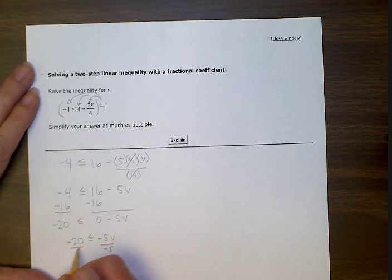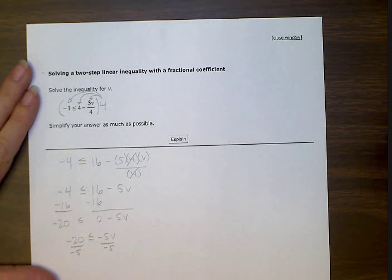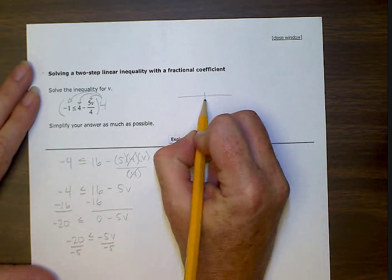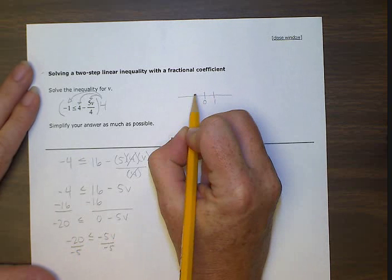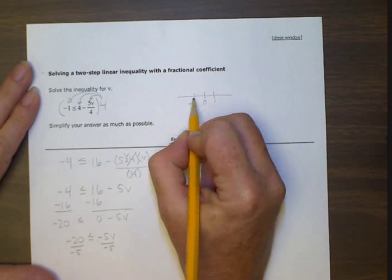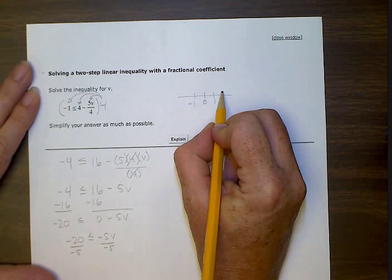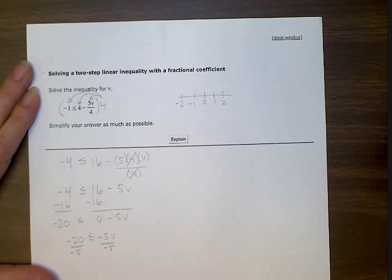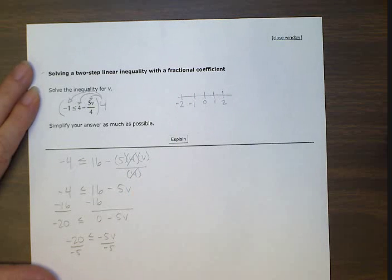In inequalities, we have something interesting happen every time we divide or multiply by a negative number. And negative, you might remember from this number line, is the opposite. Here's zero. Here's one over here, but this is the opposite, negative one. Over here we have two, but over here we have the opposite of two, negative two. So we have this opposite operation happening.